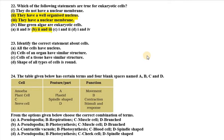Twenty-third question: identify the correct statement about cells. All cells have a nucleus; cells of an organism have similar structure; cells of a tissue have similar structure; the shape of all types of cells is round. The correct statement is C — cells of a tissue have similar structure, because a tissue is made from common cells and therefore their structure is the same.